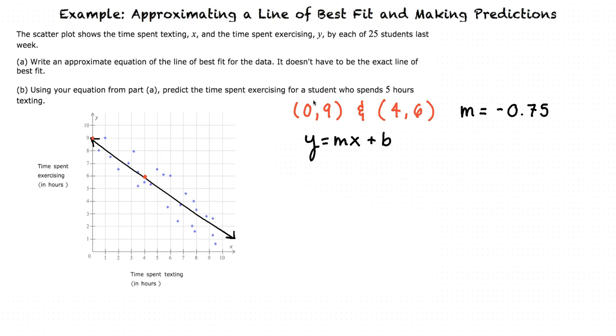Using the coordinate point (0, 9), we will plug in 9 for our y, negative 0.75 for m, our slope, and 0 for x plus b, which we will then solve for.